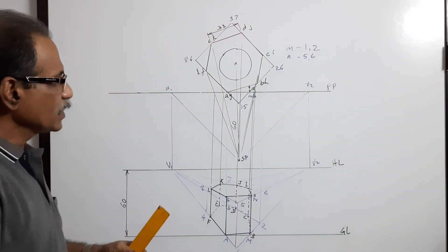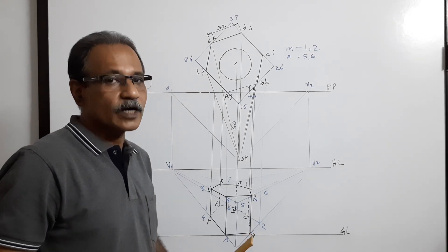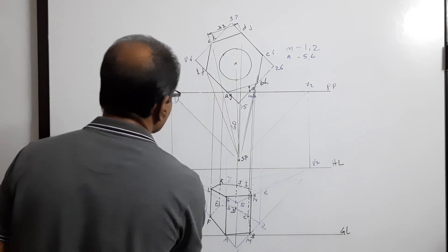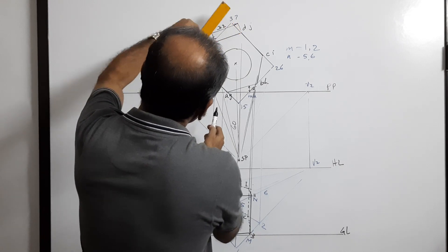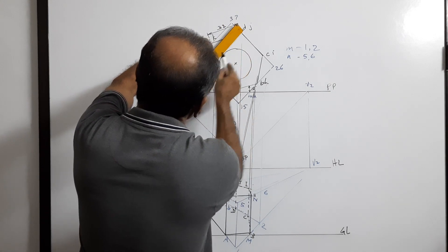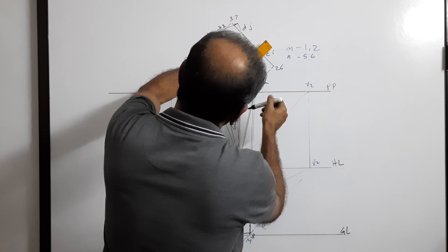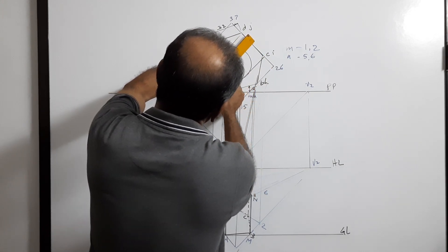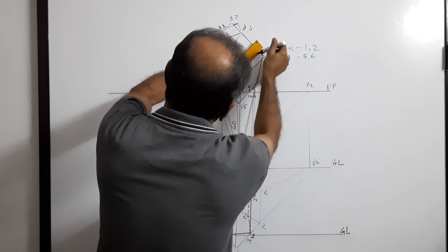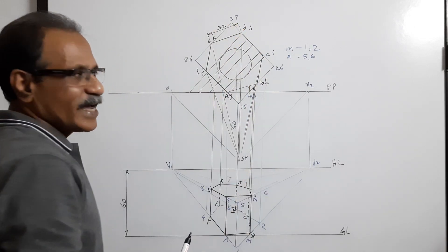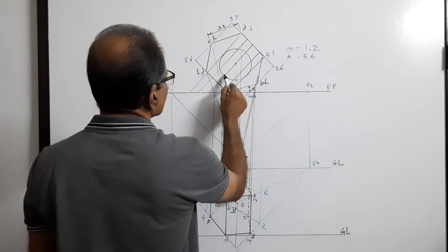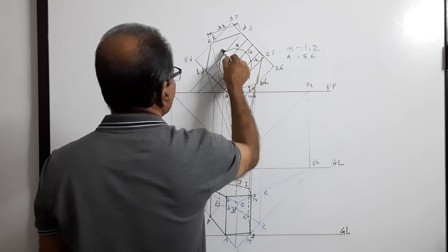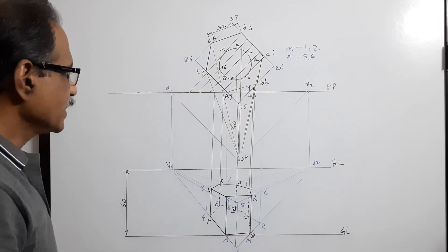Now you have a circle — the hole. You have to take a few points on the circle; I take 8 points. If I connect D and F it will be tangential to the circle, and connecting A and C will also be tangential to the circle. I draw two more lines parallel to those tangent lines so that I get 8 points on the circle, numbered 9, 10, 11, 12, 13, 14, 15, and 16.